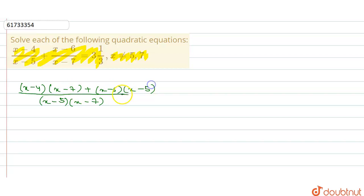This equals a proper fraction. We will convert it: 3 and 9 plus 1, which equals 10 by 3.